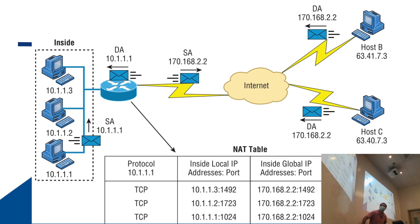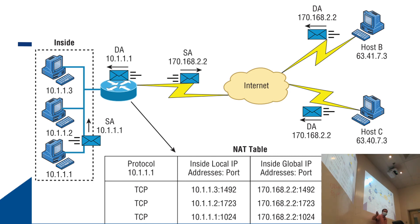Here's a basic overloading NAT example. You can see different inside hosts all sharing one public source address as they connect to the internet. The router handles all the network address translation. Looking at the NAT table, all connections use TCP, and you can see the protocol coming from the router with the inside and outside addresses tracked. Each host has a different private IP address, but they all share that one public IP.